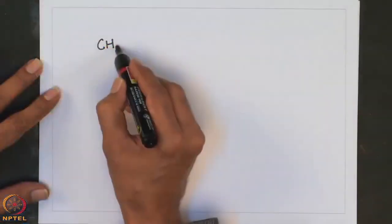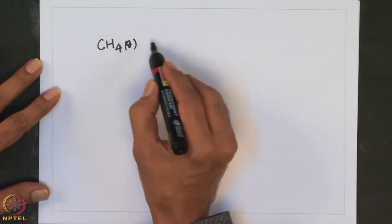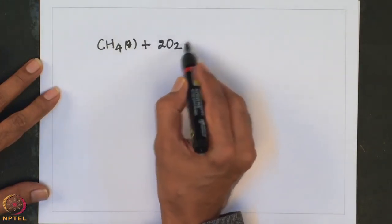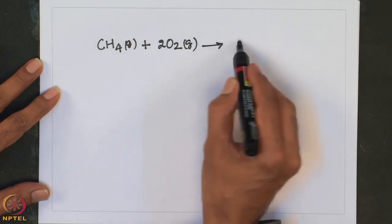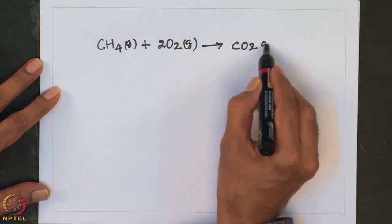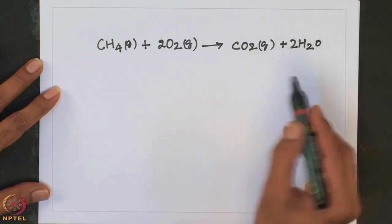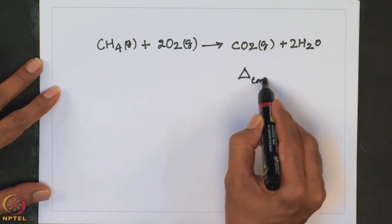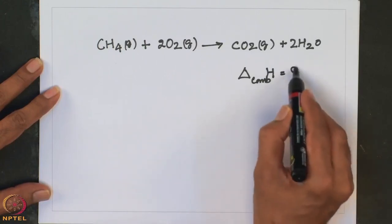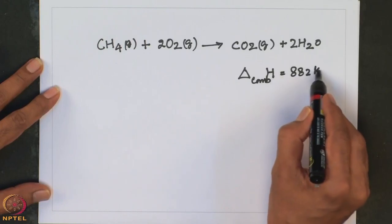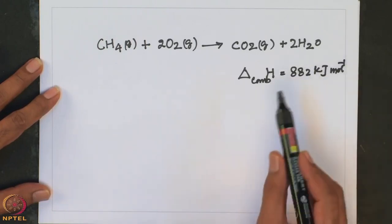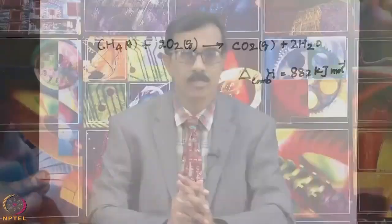How does that happen? Essentially, we burn methane. The combustion enthalpy indicates the exothermic nature of this reaction. Apart from this combustion reaction, methane is not very reactive.